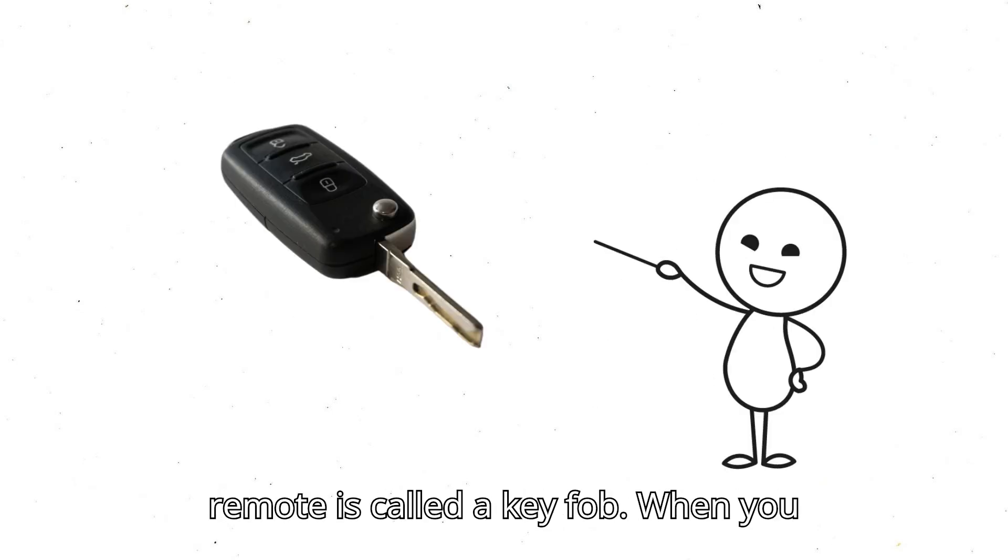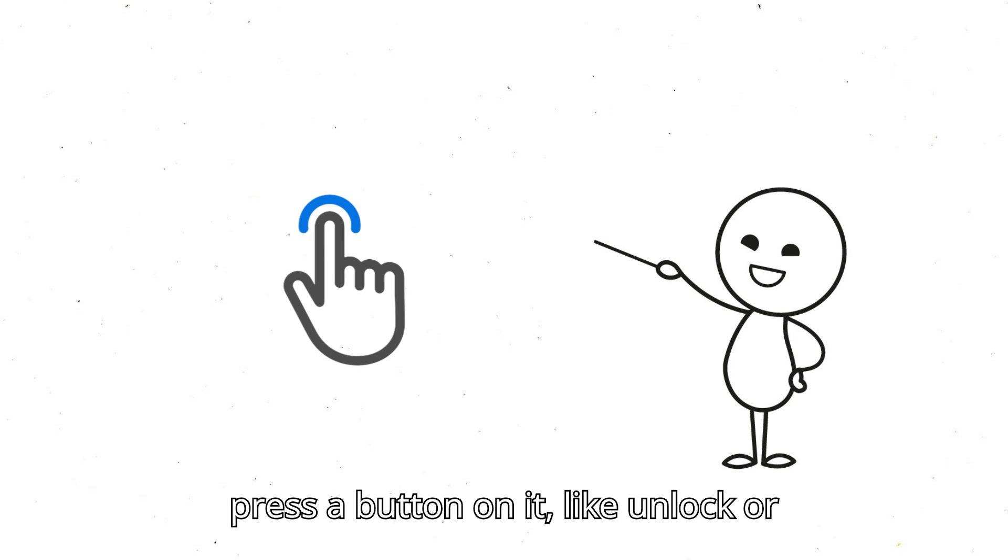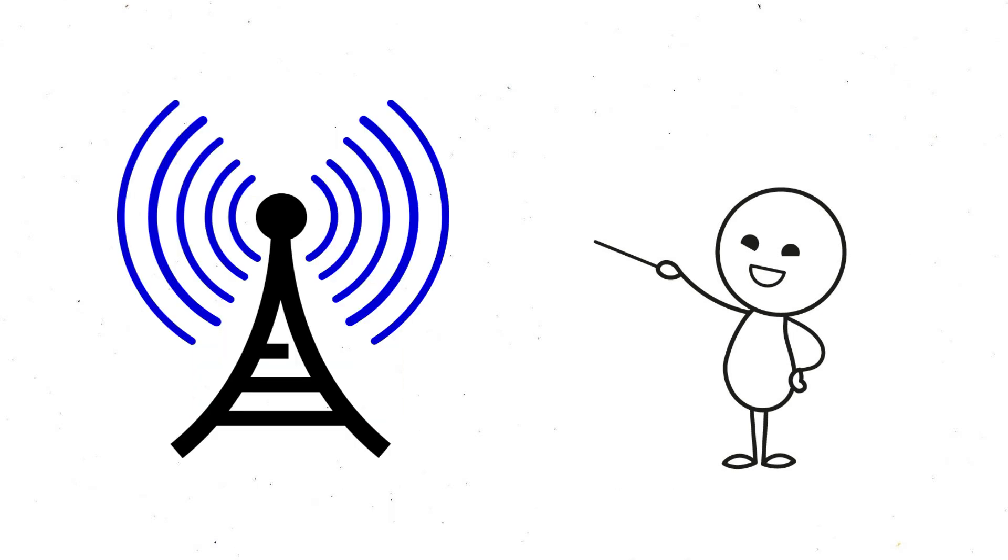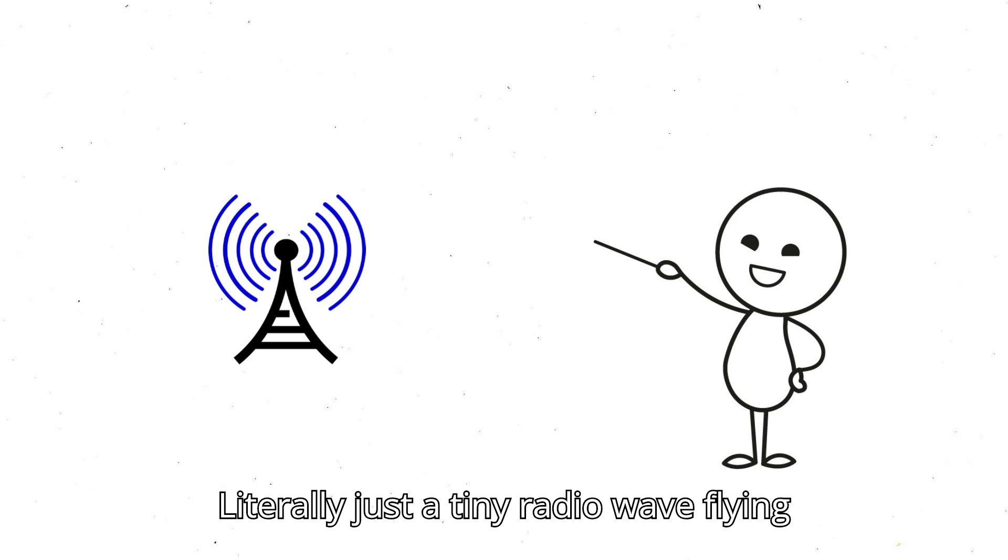Okay, so that little remote is called a key fob. When you press a button on it, like unlock or lock, it sends out a radio signal. Literally just a tiny radio wave flying through the air.